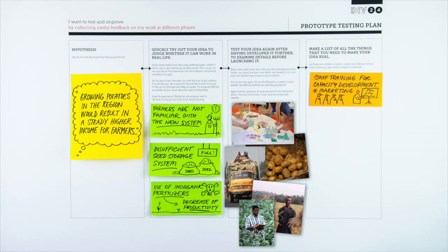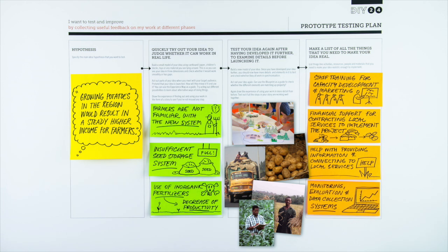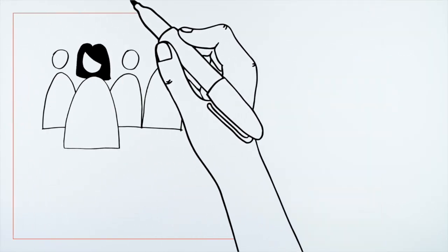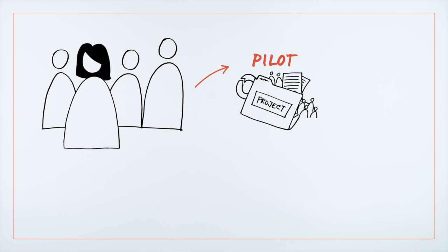Before they can make their idea a reality, they need to make a list of all the things that they need. Using the prototype testing plan, Helen and her team are confident enough to run a pilot project that has a greater chance of being successful.